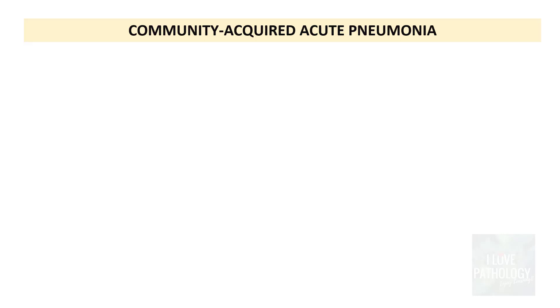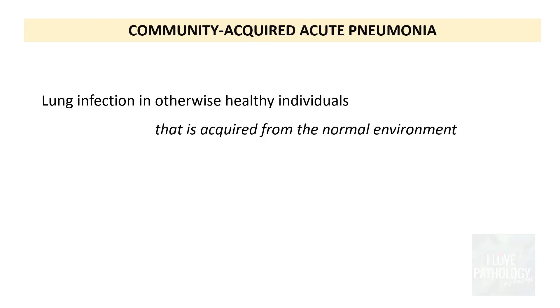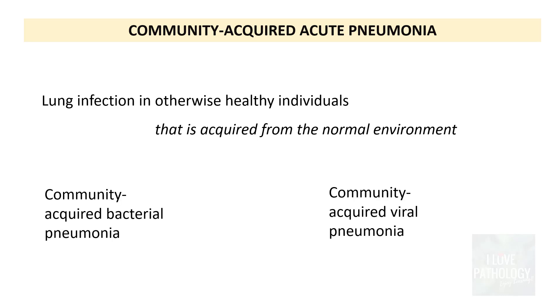When I say community-acquired pneumonia, I am talking about community-acquired acute pneumonias and not the chronic pneumonias — we will discuss that later. Community-acquired pneumonia is a lung infection in an otherwise healthy individual that is acquired from the normal environment. They are categorized into community-acquired bacterial pneumonia and community-acquired viral pneumonias, and we will discuss the bacterial type today.